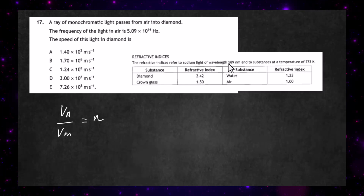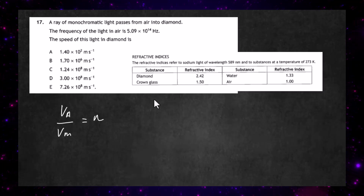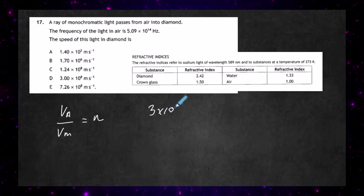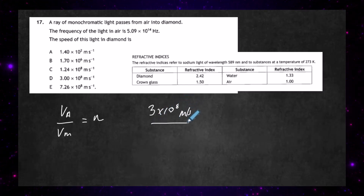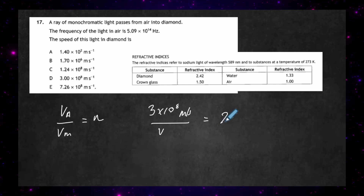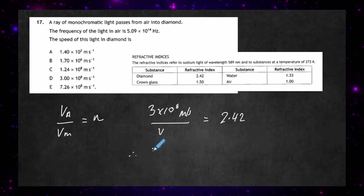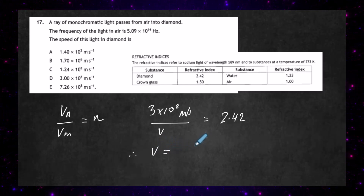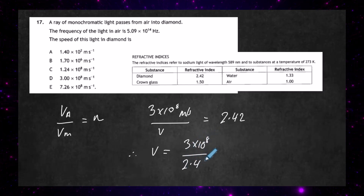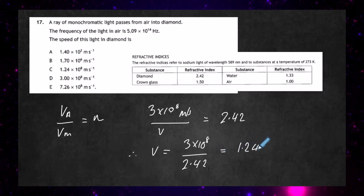The refractive index for diamond is 2.42. So we have the speed of light in air — 3 × 10⁸ m/s — divided by the speed of light in the diamond, which we'll call v, and that equals the refractive index 2.42. Rearranging, v equals 3 × 10⁸ divided by 2.42, giving us 1.24 × 10⁸ m/s.